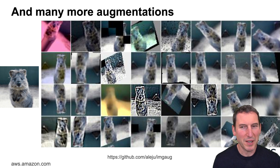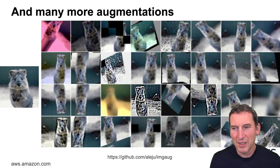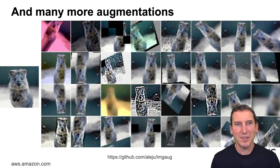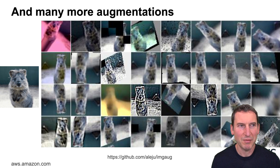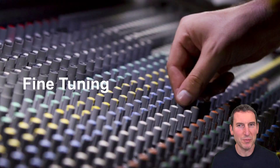There are libraries like the one from Albumentations which give you a good list of all the possible transforms you can apply. This keeps getting augmented all the time, so check out what's there. Now that we have a fairly resilient base model, let's see what we can do if we want to fine-tune it on new data.